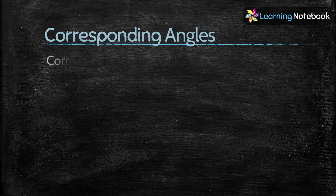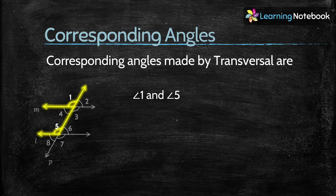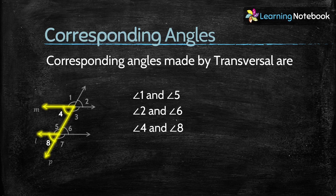Now let's see what are corresponding angles made by a transversal. Angle 1 and angle 5 are corresponding angles. Similarly, angle 2 and angle 6, angle 4 and angle 8, and angle 3 and angle 7 are also corresponding angle pairs.